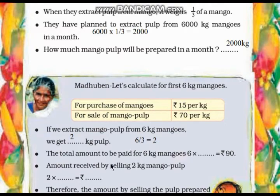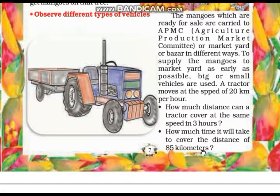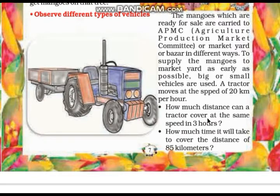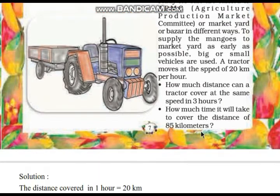On page number 7, the question is: a tractor moves at the speed of 20 km per hour. How much distance can a tractor cover at the same speed in 3 hours? The tractor moves at 20 km per hour, meaning it can cover 20 km in 1 hour. So how much distance can it cover in 3 hours?